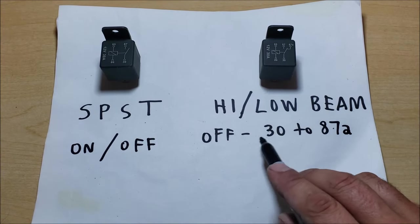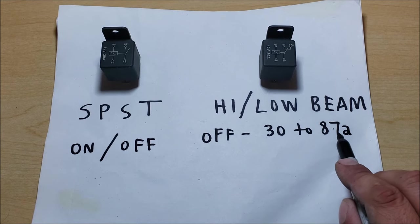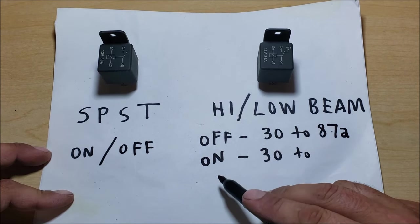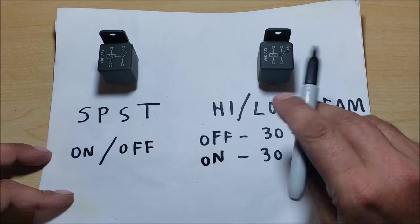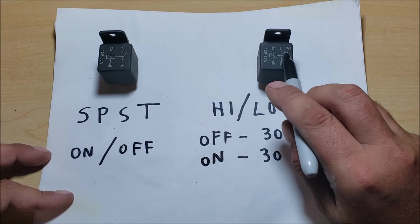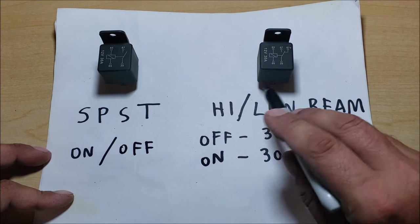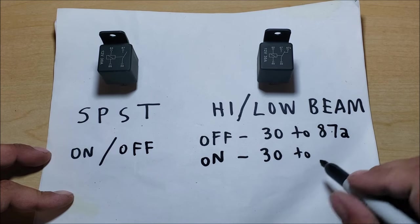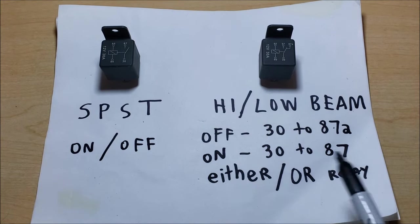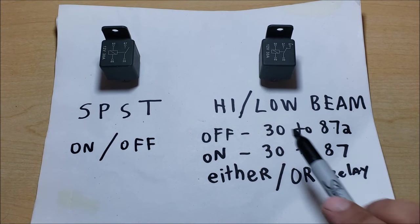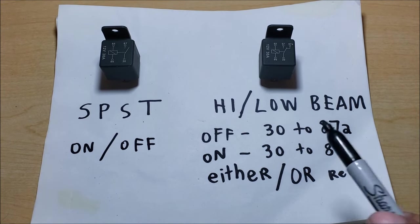So you are either sending power to 87a or you are sending power to 87. If I'm going to call this anything, I call it the high beam low beam relay. So when the relay is off, 30 sends power to 87a. When you turn the relay on, energizing the electromagnet, pulling the switch close, if you look close you'll see it switch to 87. When the switch is on or energized, 30 goes to 87.